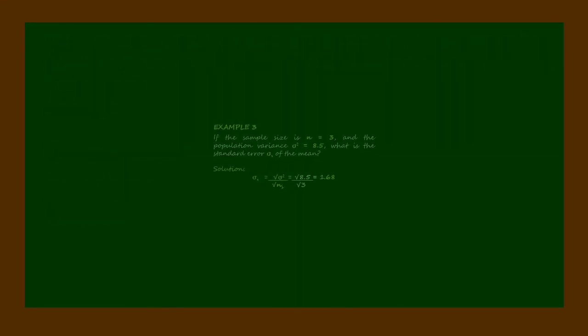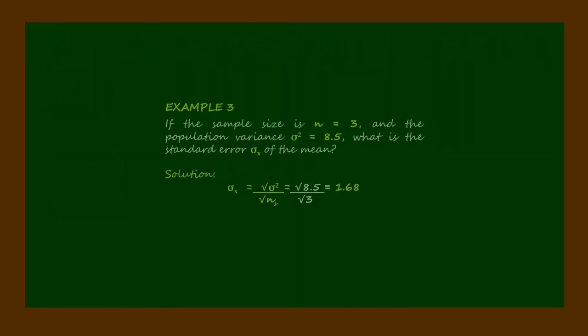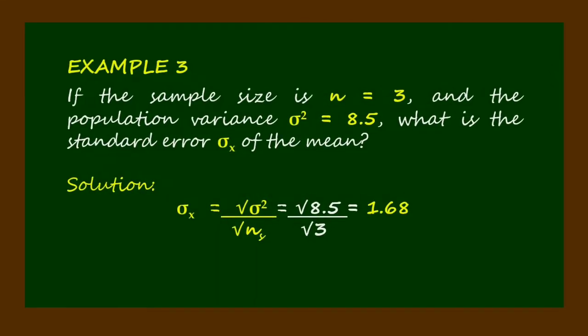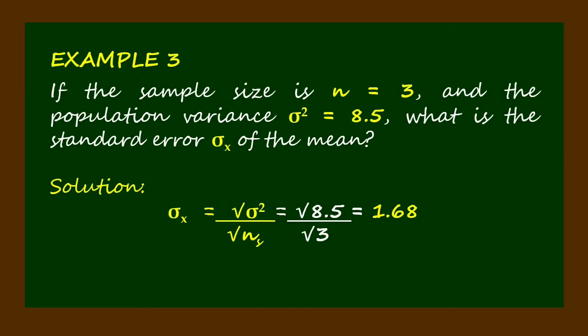Let's use the given formula in Example 3. If the sample size is n equals 3 and the population variance sigma squared equals 8.5, what is the standard error of the mean? And here's the solution.